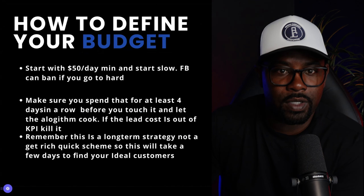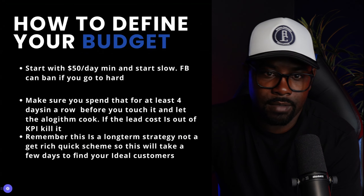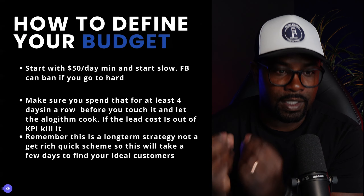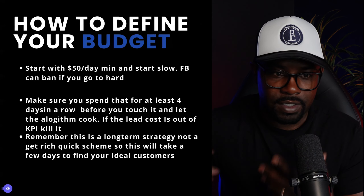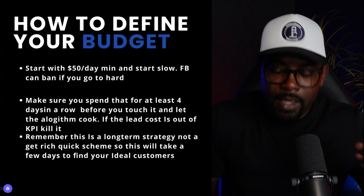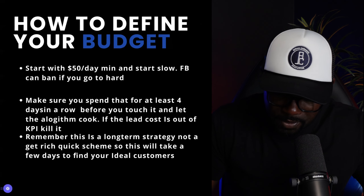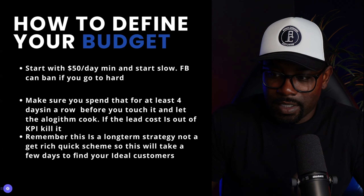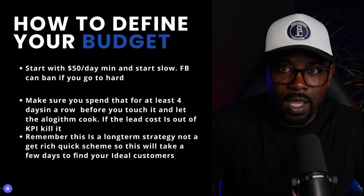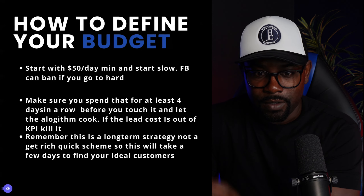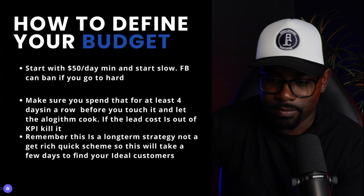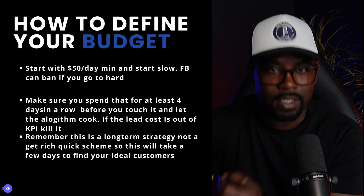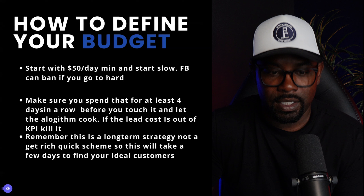The next thing you want to do is define a budget. Start with $50 a day as a minimum and start slow — Facebook can ban you if you go too hard. Spend that for at least four days in a row before you touch it and just let the algorithm cook. When you first start, within the first day you're probably going to see one lead for $30, maybe $50. It's trying to find your ideal client, so just let it cook. Within four days the algorithm will sort it out. Remember, this is a long-term strategy — it's not a get-rich-quick scheme.